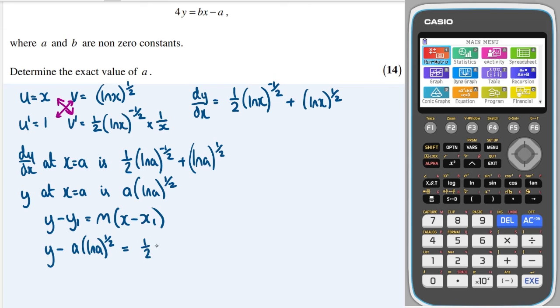My gradient is pretty messy, but it was a half (ln a) to the minus a half, plus (ln a) to the half. And then I need to multiply that by, so I'm going to have to have that all in brackets like this. And I'm going to multiply that by x minus the x coordinate, which is just a.